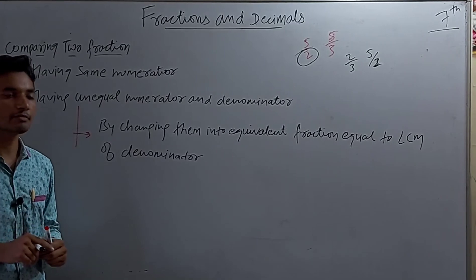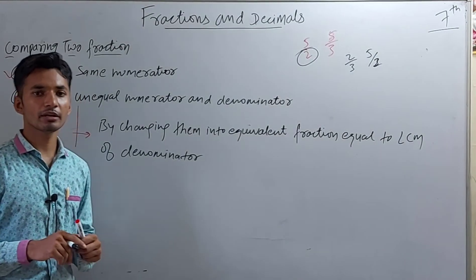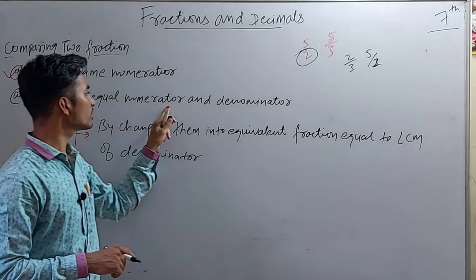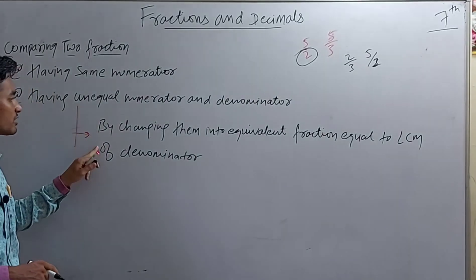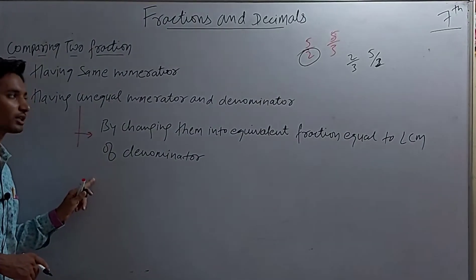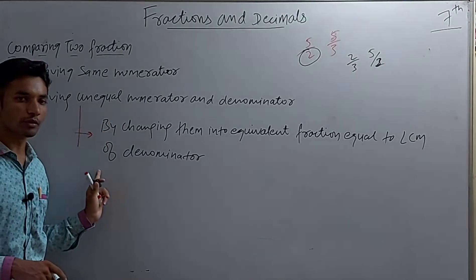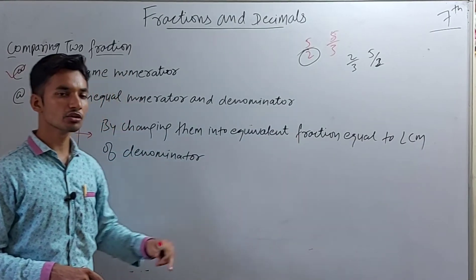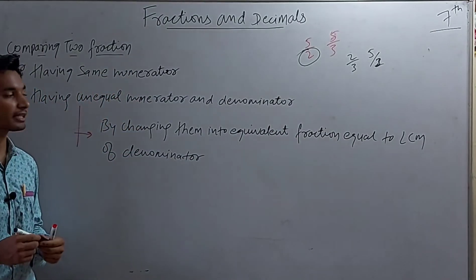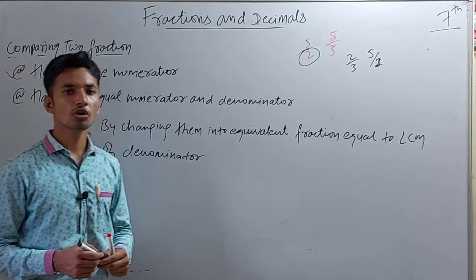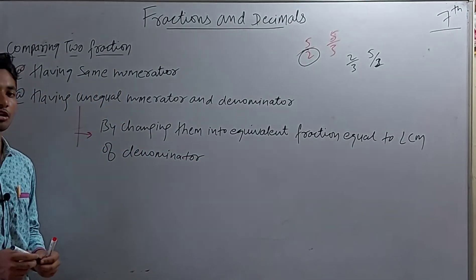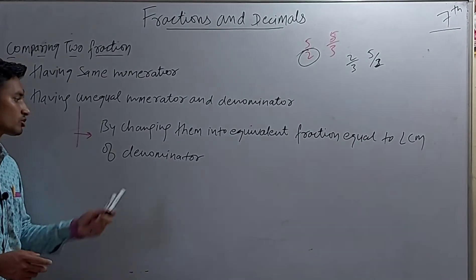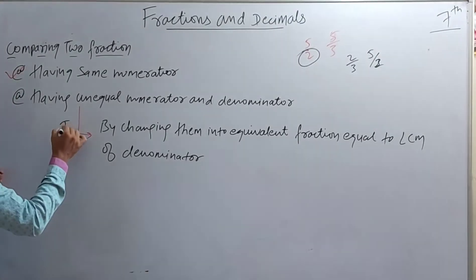The second case is having a different numerator and a different denominator. Here we use the LCM — the Least Common Multiple. This second method has two sub-methods. The first method is by changing them into equivalent fractions equal to the LCM of the denominators. Let's do some examples.